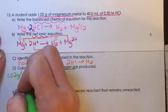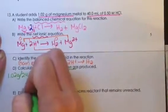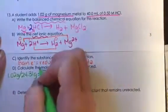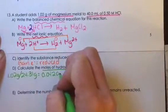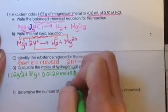If we divide that by the molar mass of magnesium, which is 24.31, then there are 0.0420 moles of magnesium.